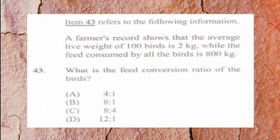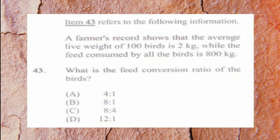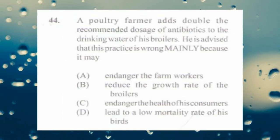Question number forty-three: a farmer's record shows that the average live weight of 100 birds is 2 kg, while the total feed consumed by all birds is 800 kg. What is the feed conversion ratio? The answer is a) 4 to 1. The formula is total feed consumed divided by total body weight: 800 divided by (100 × 2 = 200) equals 4 to 1.